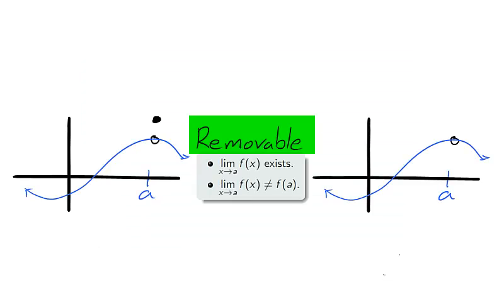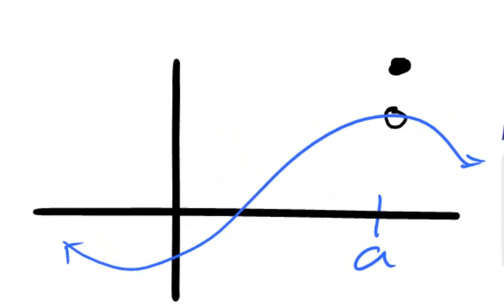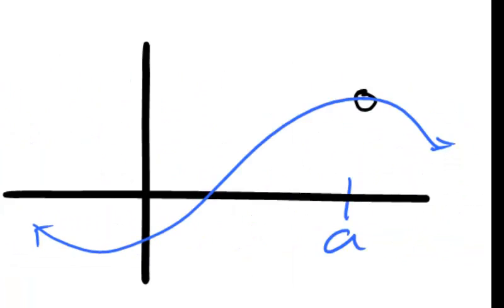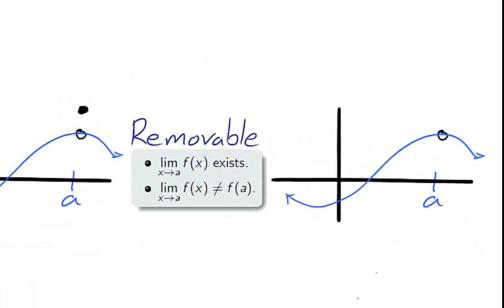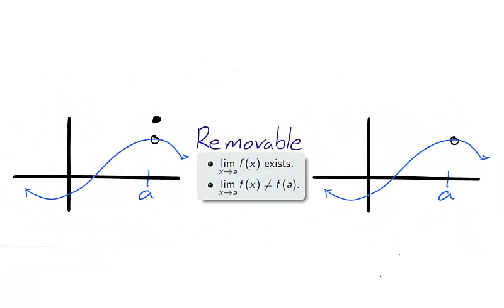In both graphs, there is a removable discontinuity at x equals a. A removable discontinuity is the case where the limit exists but is unequal to the actual value. This leads to two graphs, one where the actual value exists but is unequal to the limit, and one in which it does not exist. We use the word removable because we can make it continuous by just redefining the value of f at a.